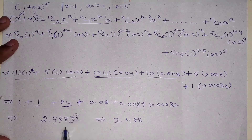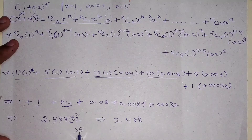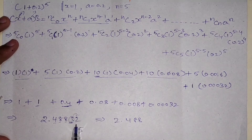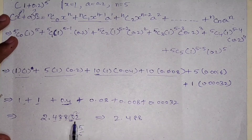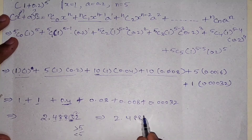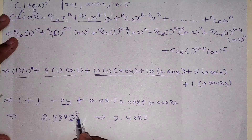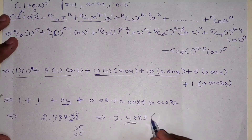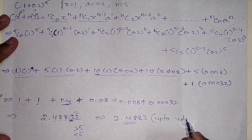Now rounding to 4 decimal places: we look at the 5th decimal digit which is 2, and since 2 is less than 5, we round down. So the answer up to 4 decimal places is 2.4883.